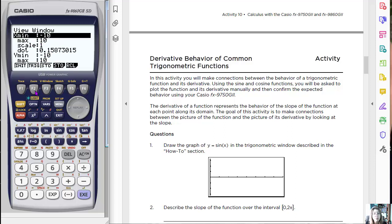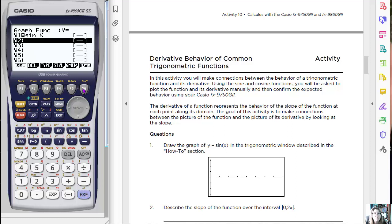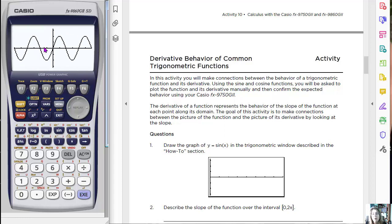Maybe we want to change the window. So if I hit F3, I can go to a view window. This is the standard window right now. Maybe I want to use a trig window that makes a little more sense. We're going to execute. Now let's see what the difference is. Yeah, so I can see it a lot better if I use the trig window because it's a trig function. So hit exit again to get back to the equations.